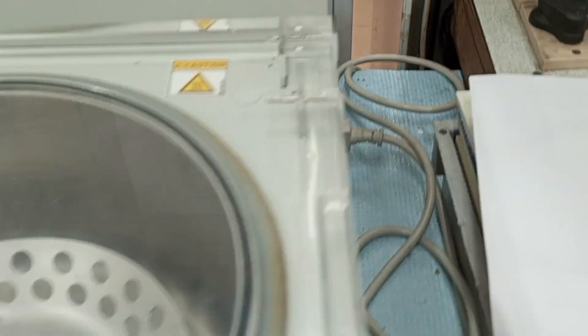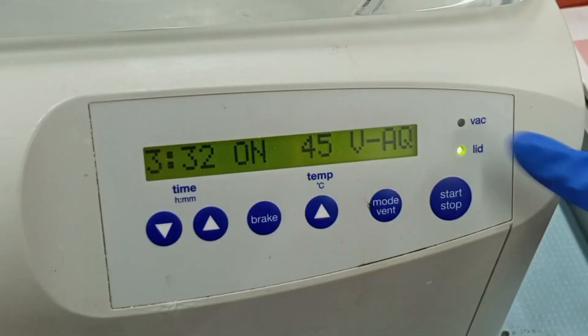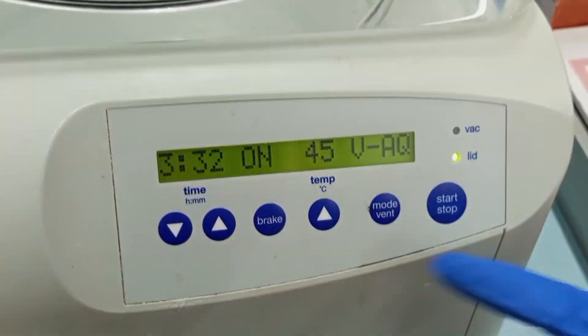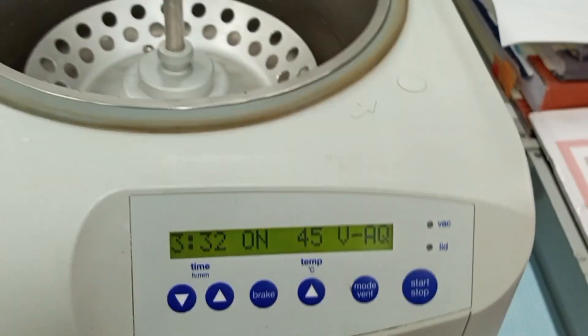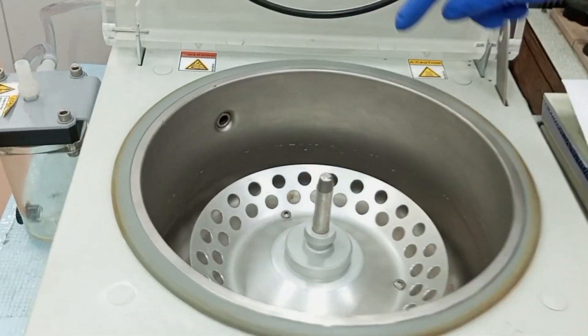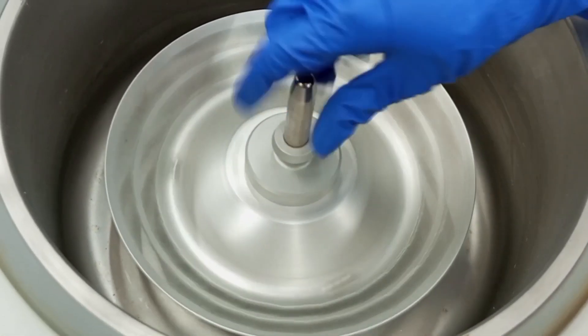You can see green light is present in the lid side. Always keep in mind that you should open the concentrator whenever green light is blinking in the lid side. When the vac shows the green light that means vacuum is created inside the instrument, so you cannot open it. Always wait for the light to come on the lid side.